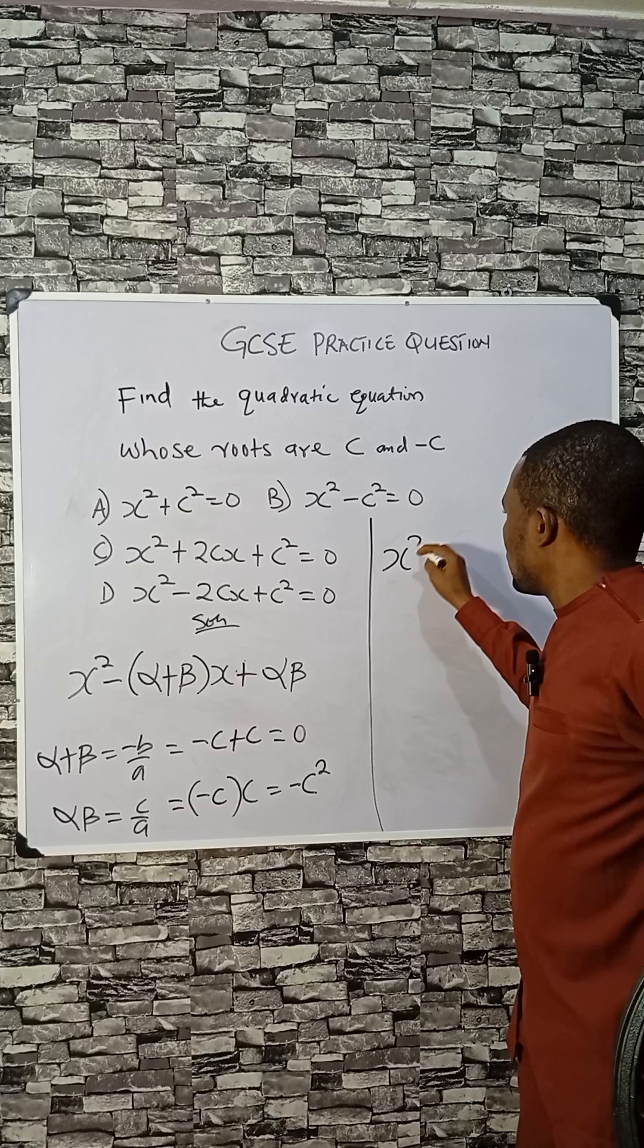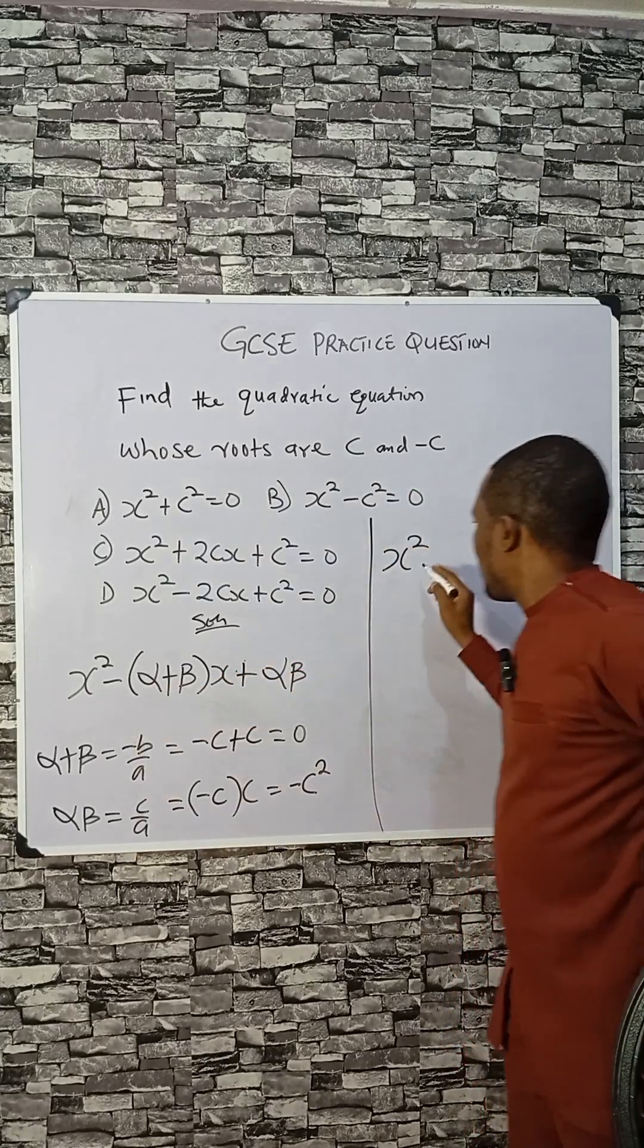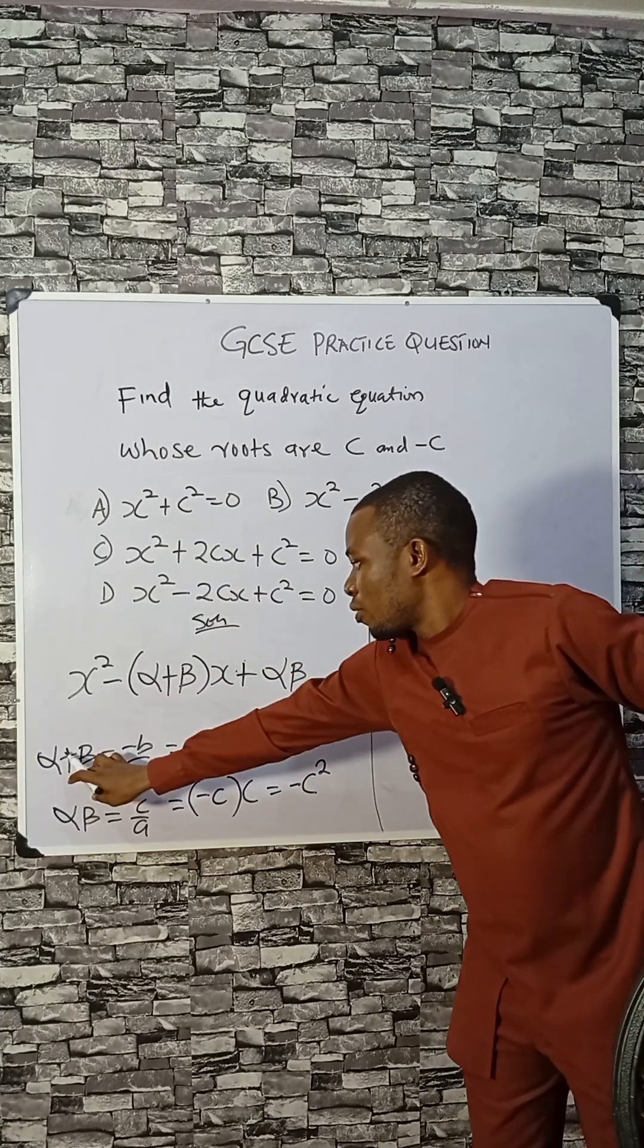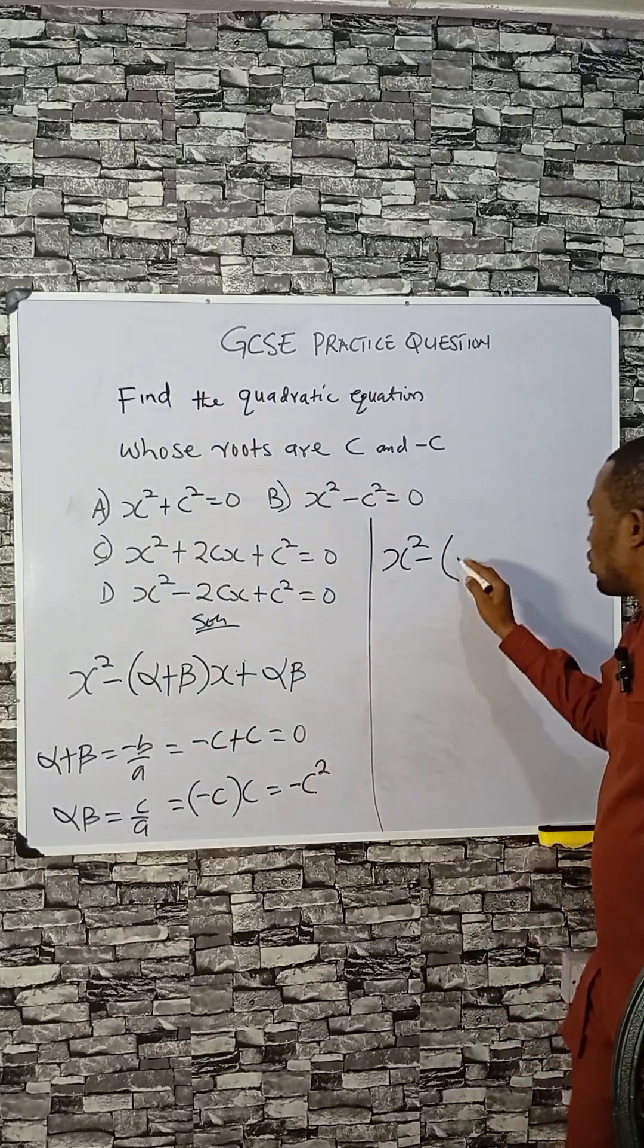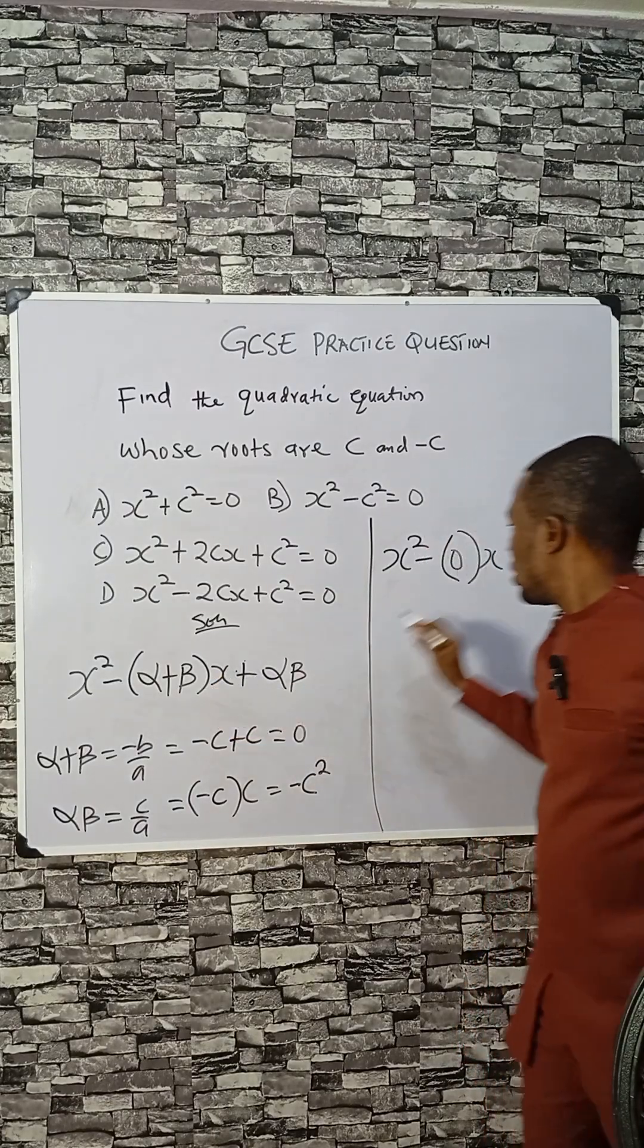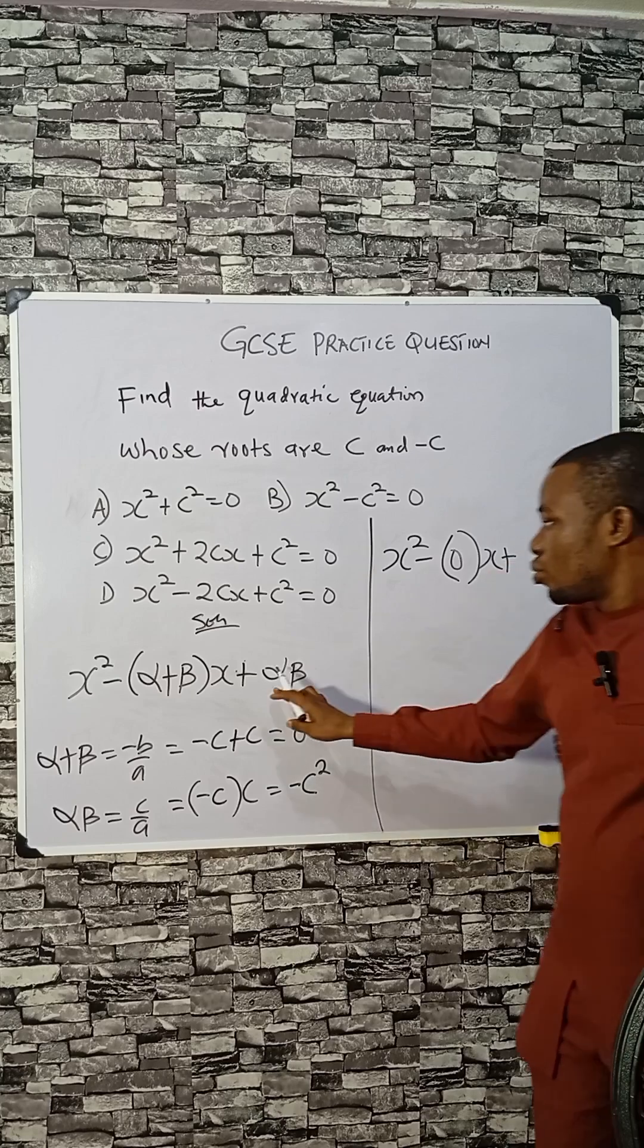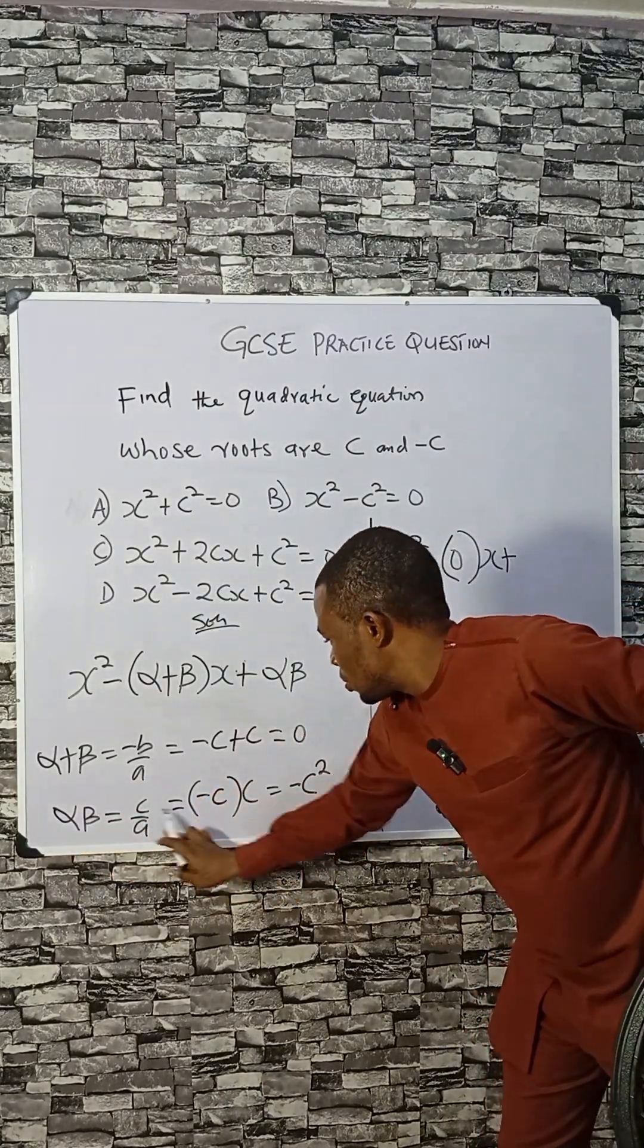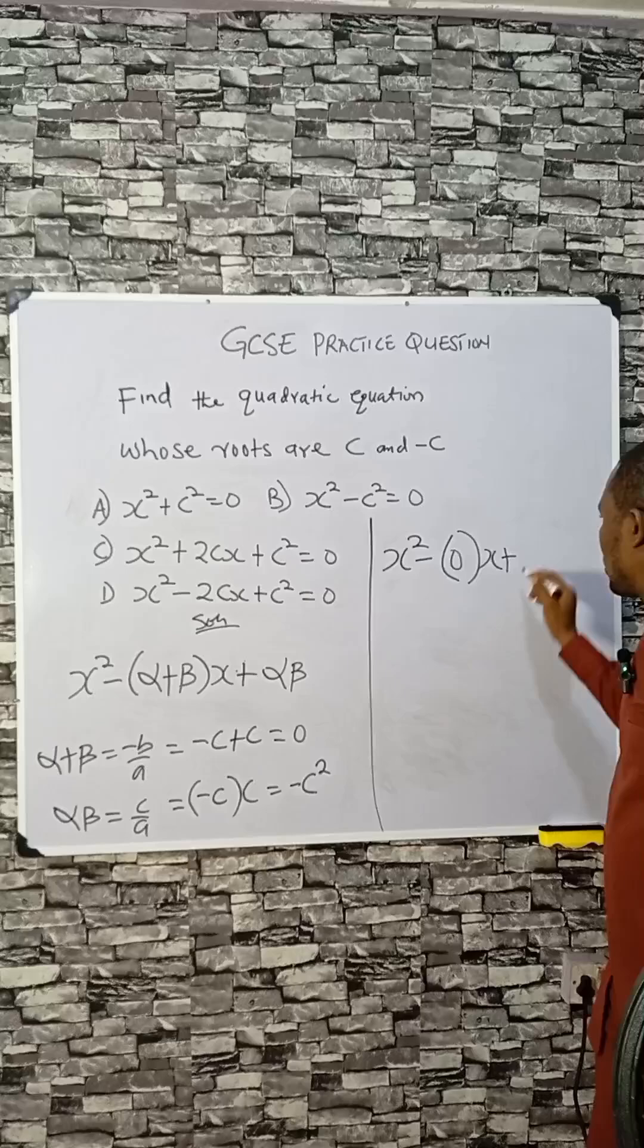x squared is there, minus sum of root. Sum of root here was zero, so we put zero here times x. Then plus product of root. Product of root was minus c squared, so we